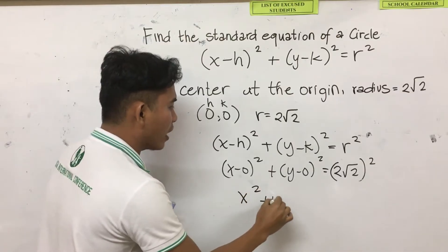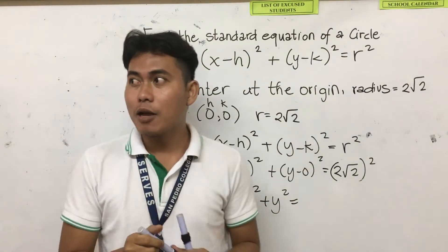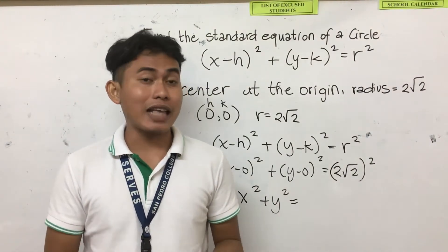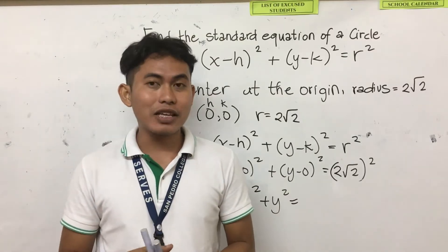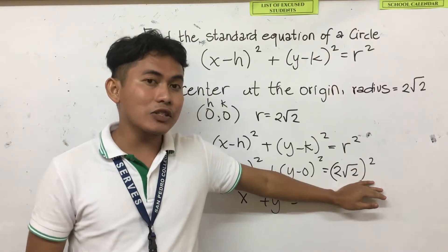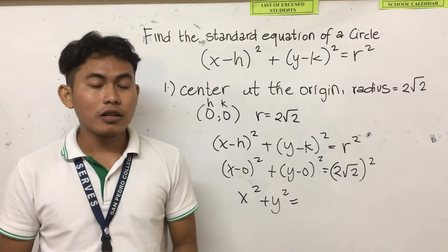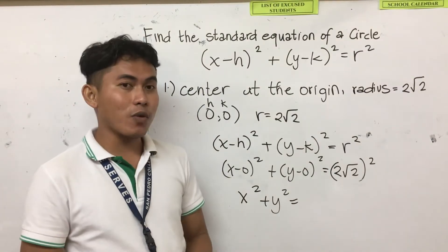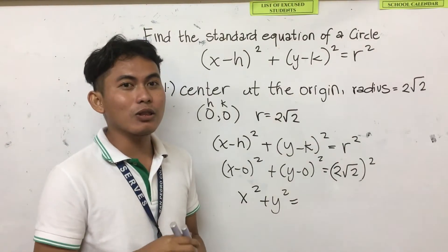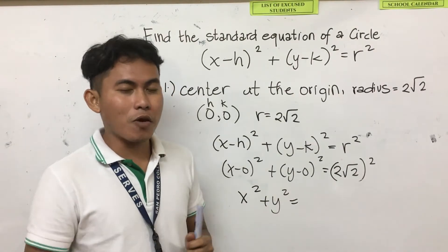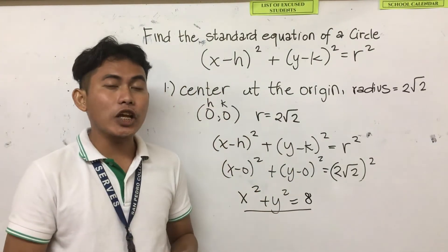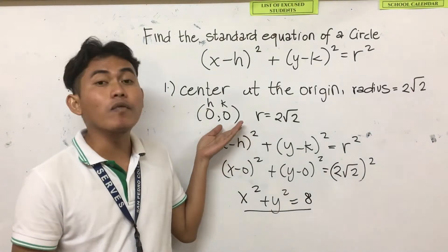So you have now your final answer: x squared plus y squared is equal to... Why is it just x squared? Because if you simplify x minus 0 squared, the answer is x squared. The same with y minus 0 squared — the answer is y squared. Simplify also (2 square root of 2) squared: 2 squared is 4, times 2 is 8. So the answer is x squared plus y squared is equal to 8. This is the standard equation of the circle given this condition.